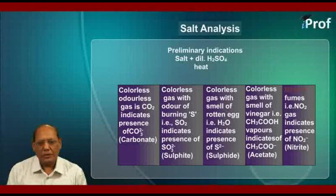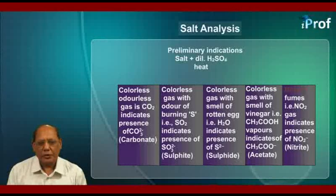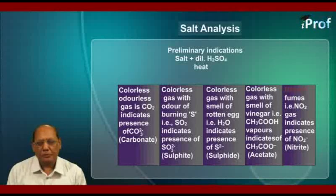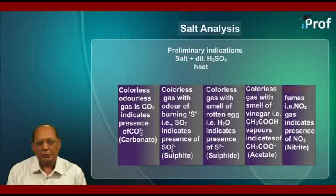Otherwise, it may be a colorless gas with the smell of rotten egg — this gas is H₂S, and it indicates the presence of sulfide ion in the salt. However, if we get a colorless gas with the smell of vinegar, then this can be vapors of acetic acid. But if the gas evolved is brown — brown fumes — then this gas can be NO₂, and it indicates the presence of nitrite ion in the salt.